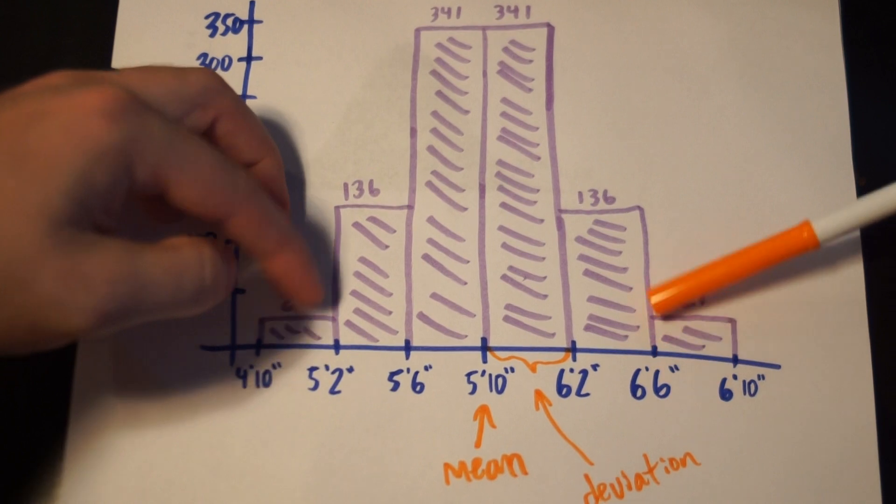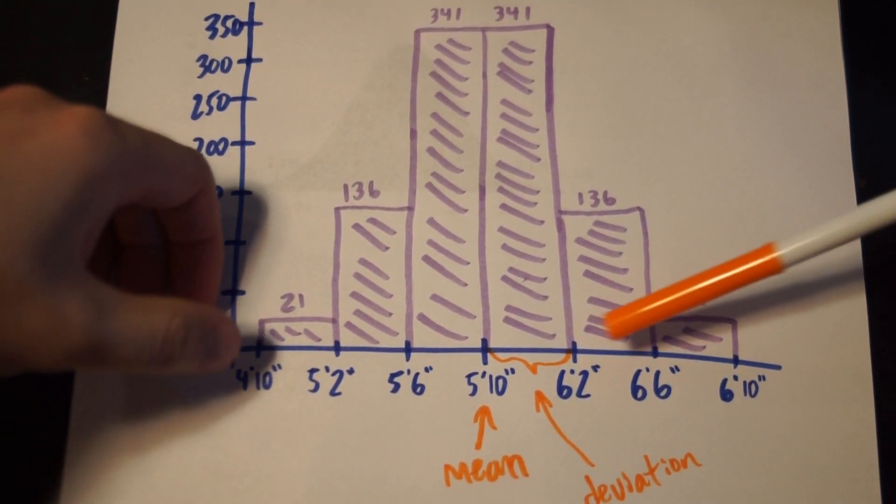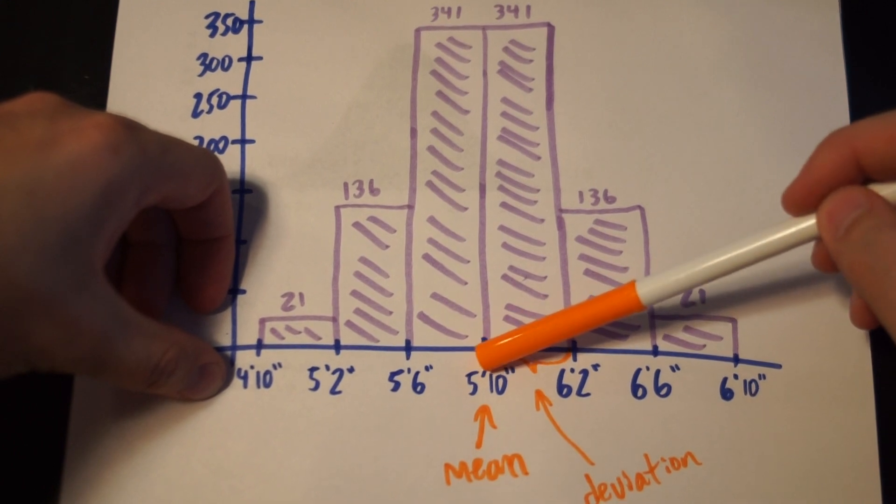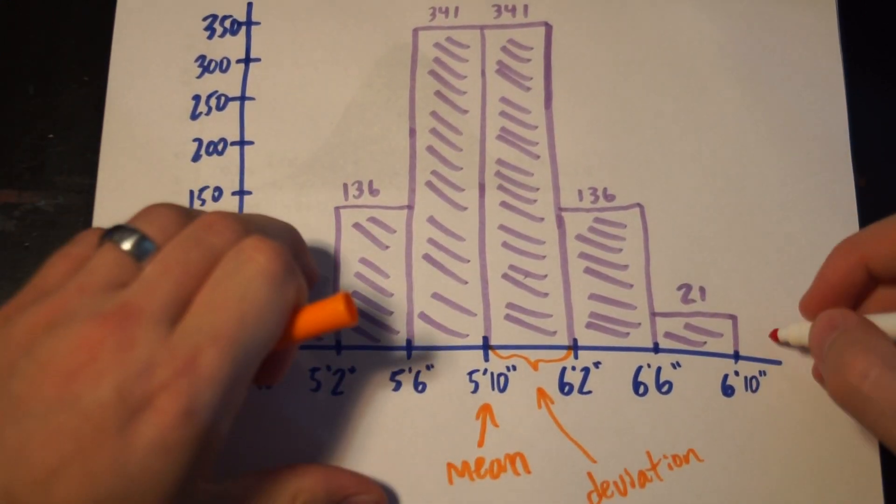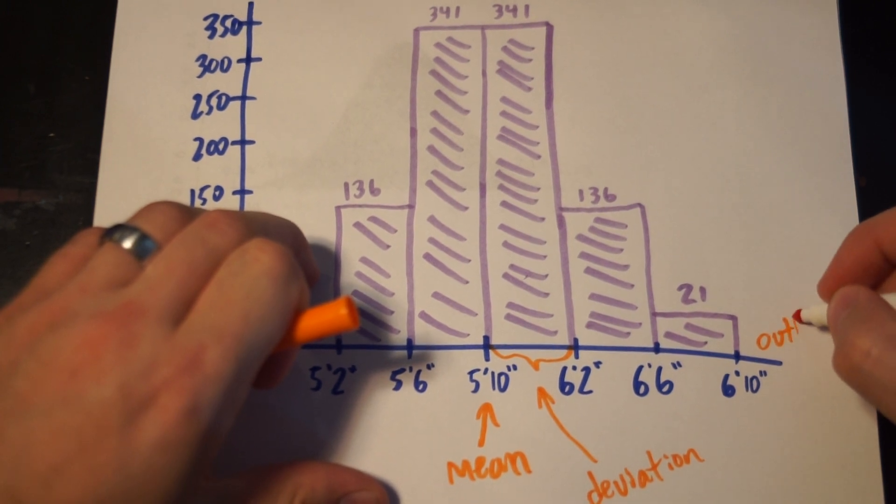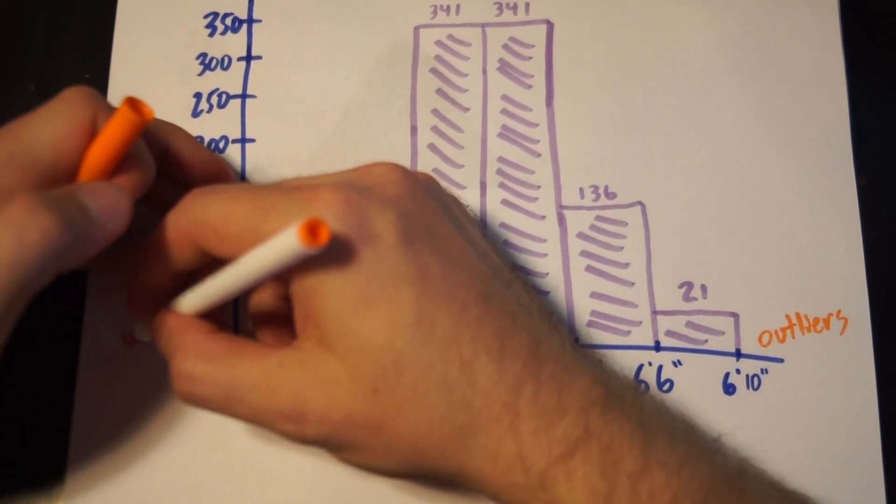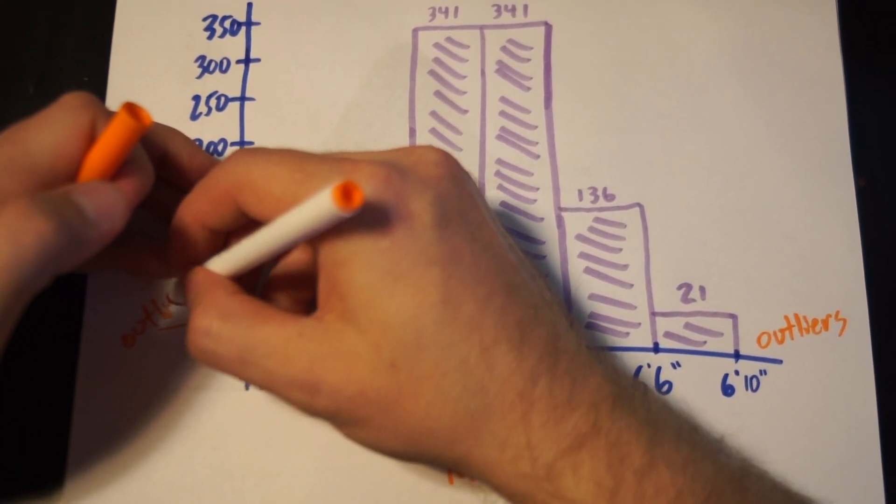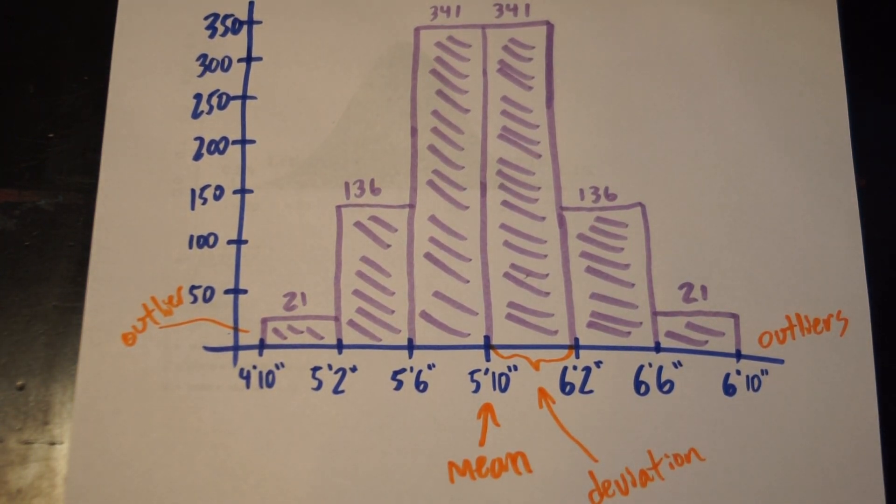And then we branch out accordingly until eventually we start hitting outliers. When you're more than three standard deviations away from the mean, you're considered an outlier. So I'm just going to label outliers out here. And anything over here would also be considered an outlier. So as long as you're taller than 4'10" or shorter than 6'10", you're not considered an outlier. Congratulations on being part of the norm.